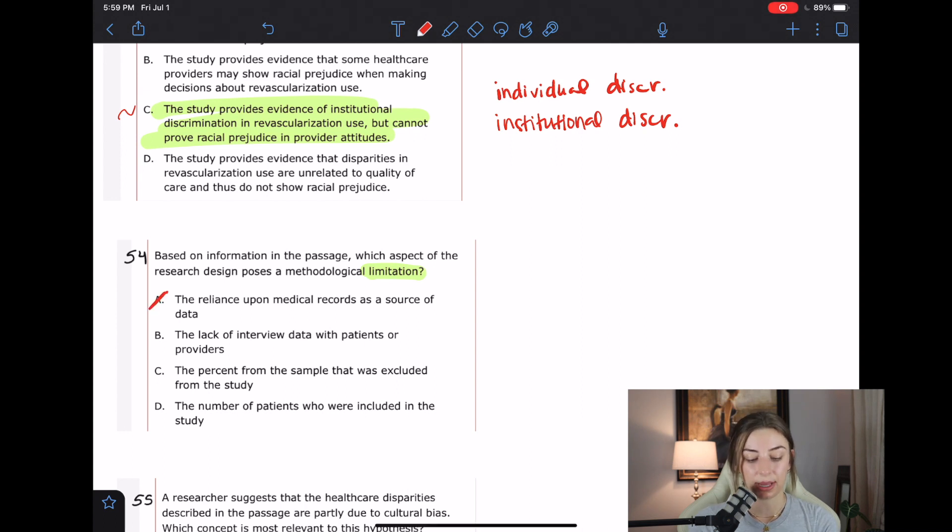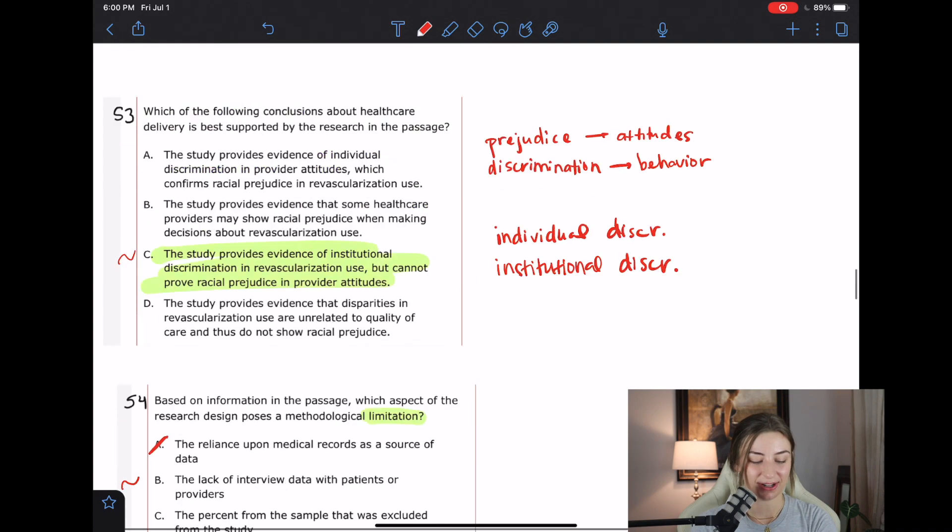B, the lack of interview data with patients or providers. Perhaps. I mean, I don't know if that would be like a limitation or if that would just be something that like could add another variable. If we had interview data that might be able to determine prejudice or something, but I think we were just kind of looking at discrimination. So I don't know. I'm going to say maybe. C, the percent from the sample that was excluded from the study. Ah, that's what I was talking about. Those people that were so sus.